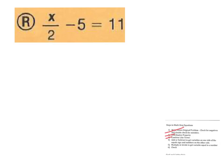On this one, there's no distributed, no combined like terms. I'm going to draw my line here, and we can see we're to the add and subtract phase, so I'm going to add 5 to both sides, and I get x over 2 equals 16.